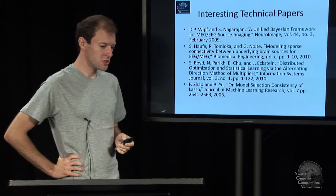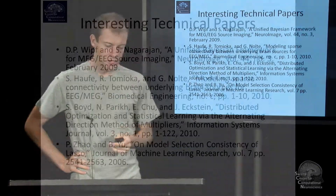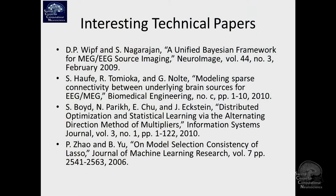There are a few technical papers that are generally interesting. There is one by David Witt and Srinagarajan on unified source localization with distributed source models — it's a really nice Bayesian approach and is highly recommended to read.